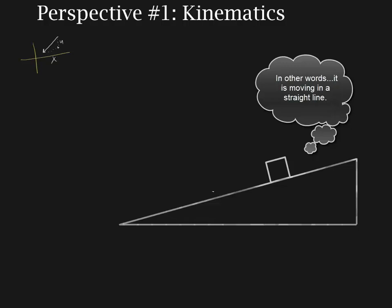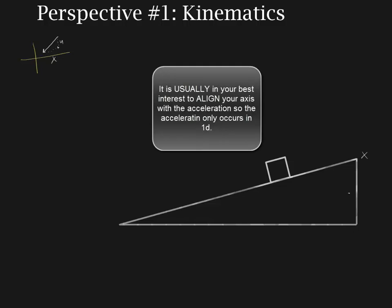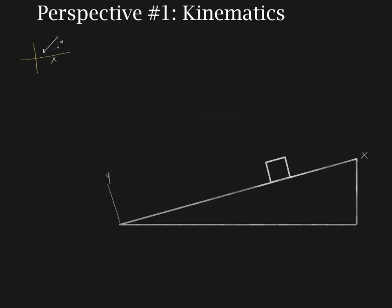So if we were to rotate our coordinate system so that our X axis is no longer a horizontal line, but our X axis is aligned with the ramp, then that becomes our X axis and our Y axis points perpendicular to it. That is what allows us to turn this problem into a one dimensional problem.